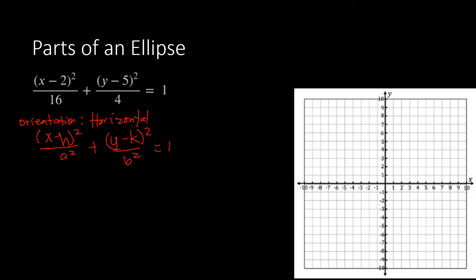Looking at the formatting for horizontal orientation, all we have to do is identify first our center. The center: we've got a 2. Since we have (x minus 2), that should be positive 2 on x. And then on y, we have (y minus 5), so that should be 5. So we've got the center already, and now we look for a.